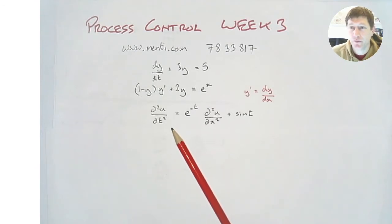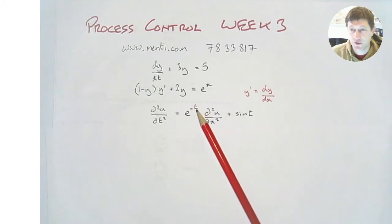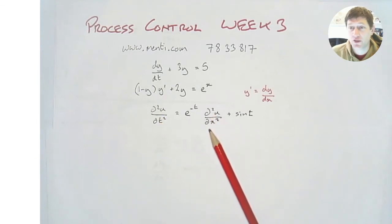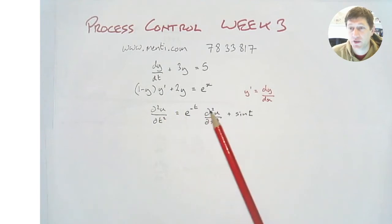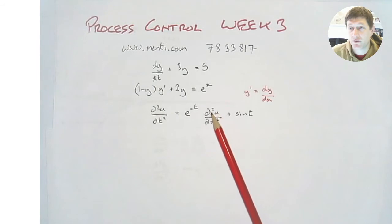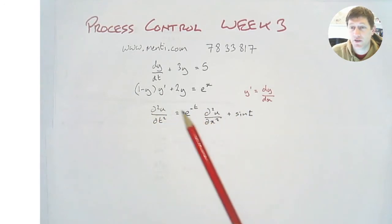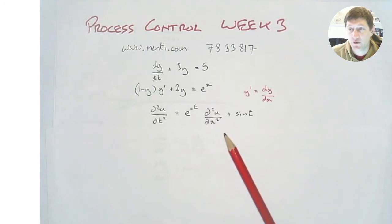A third example: u is our function to solve for. It's a function of both t and x, so we have partial derivatives. This is not an ordinary differential equation — it's a partial differential equation. The highest order of the differential terms is 2, with d²u/dt² and d²u/dx². So it's a second order partial differential equation. Is it linear? We check linearity with respect to u: u is on its own and not raised to any powers, and not multiplied by any other function of u. So this is a second order linear partial differential equation, or PDE.